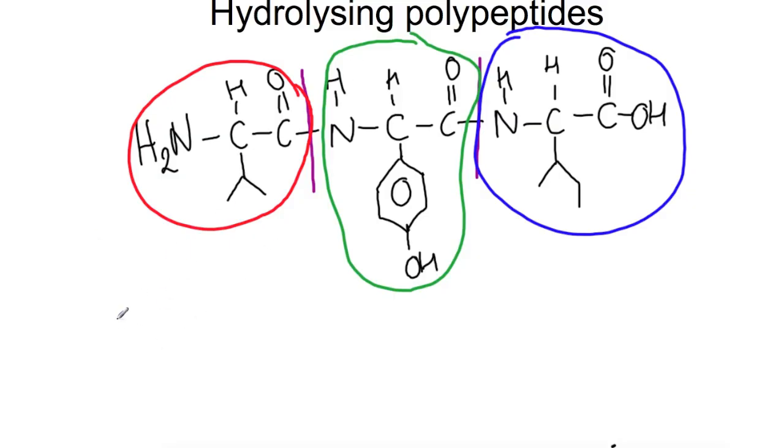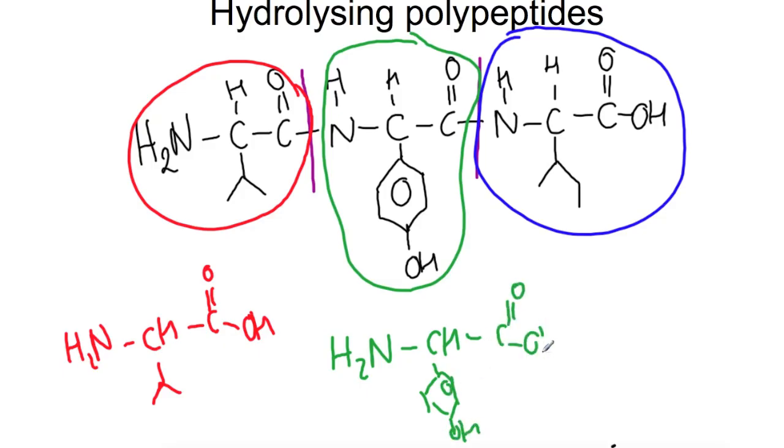So here we would have NH2 CH with its chain attached C double bond O and then the OH from the water. For our middle amino acid we need to join on the H that would have come from the water and an OH onto the other side. So we'll have NH2 CH with a chain here attached C double bond O and then the OH from the water.